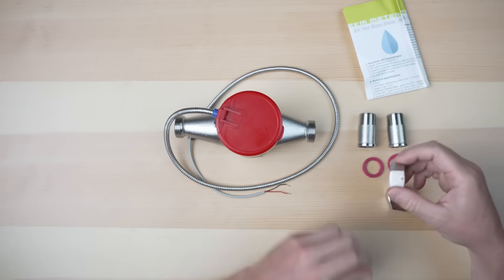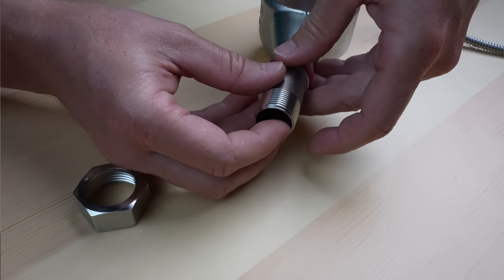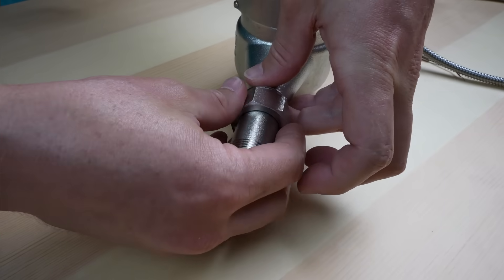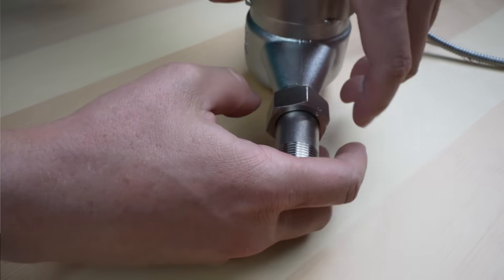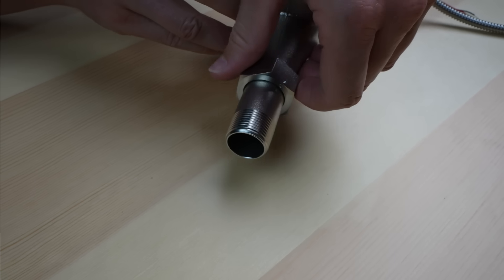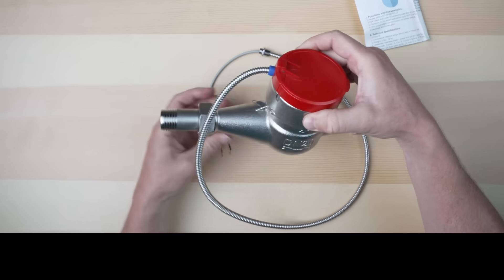So all of these just attach the fittings to the water meter, like so. Put the gasket in between the two. We do the same on the other side, like that.